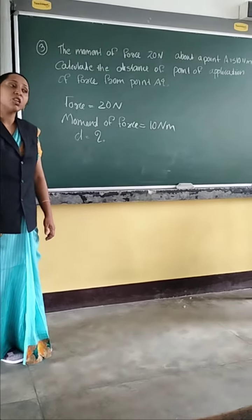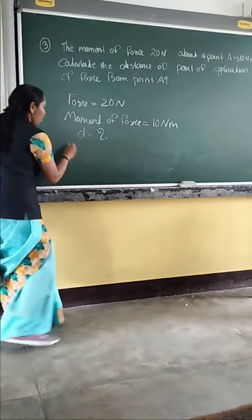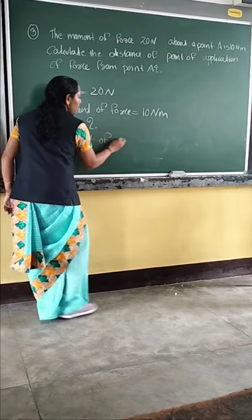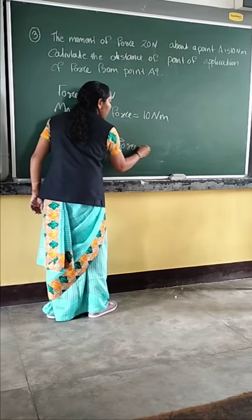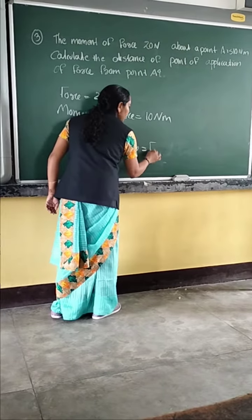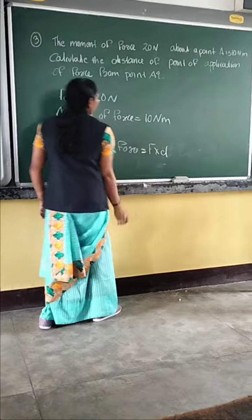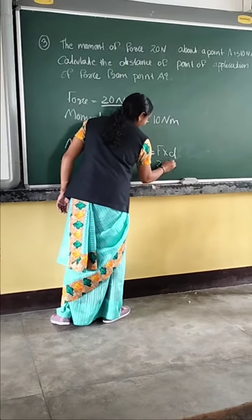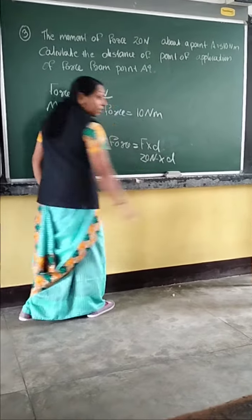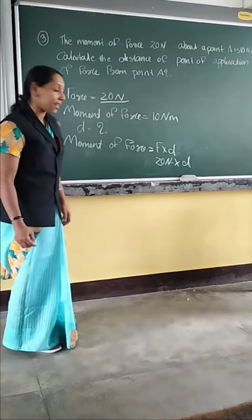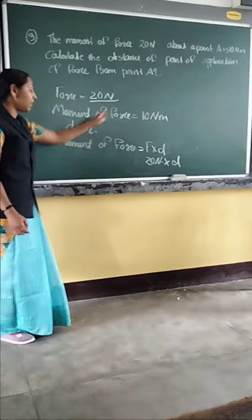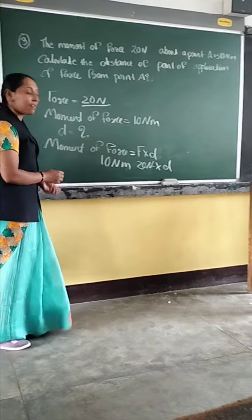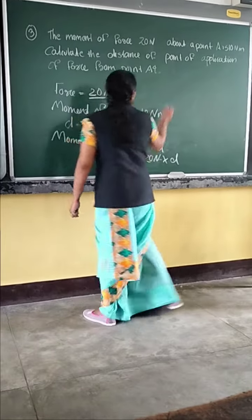What is the equation of moment of force? Moment of force equal to force into distance. The force is given as 20 Newton. The distance is not given — we want to find it out. The moment of force is given as 10 Newton meter.